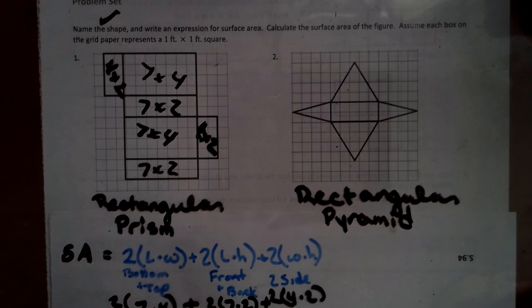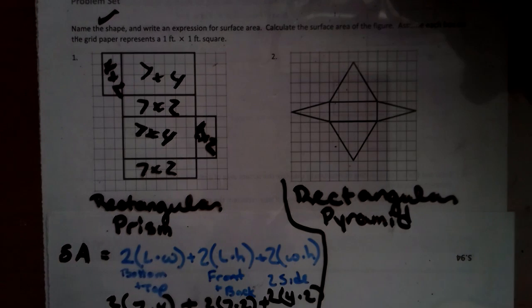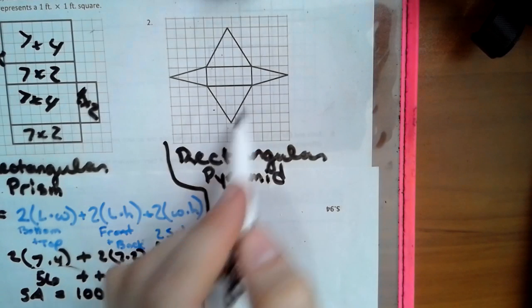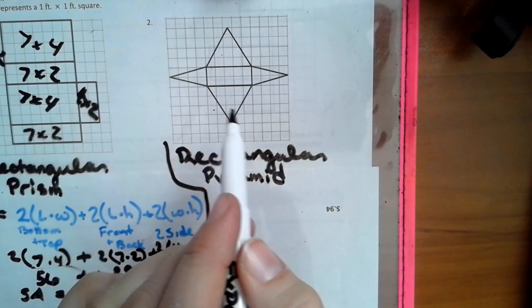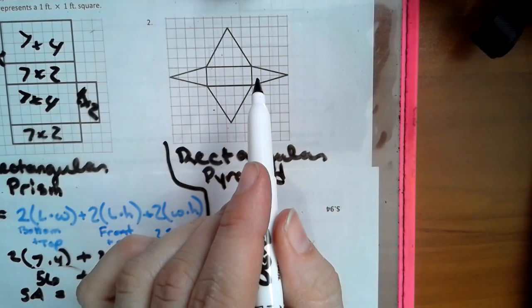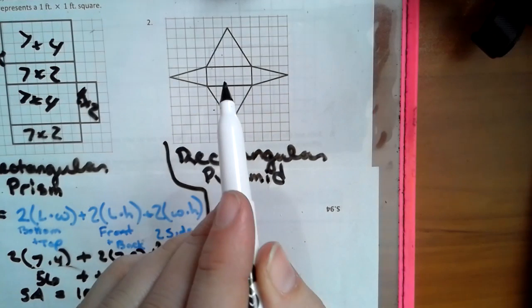So now looking at this rectangular pyramid — it has a little bit more involved. If you notice, this triangle and this triangle are the same, and that triangle and that triangle are the same. So when we do the formula for each pair, we're just going to times it by 2. And then we have our little rectangle in the middle.